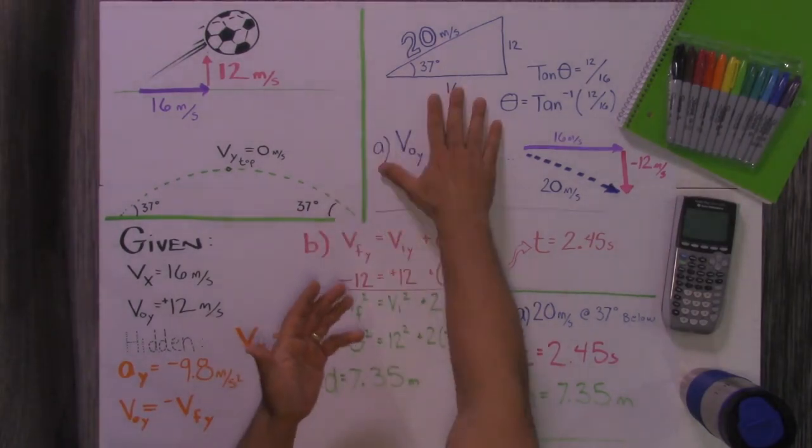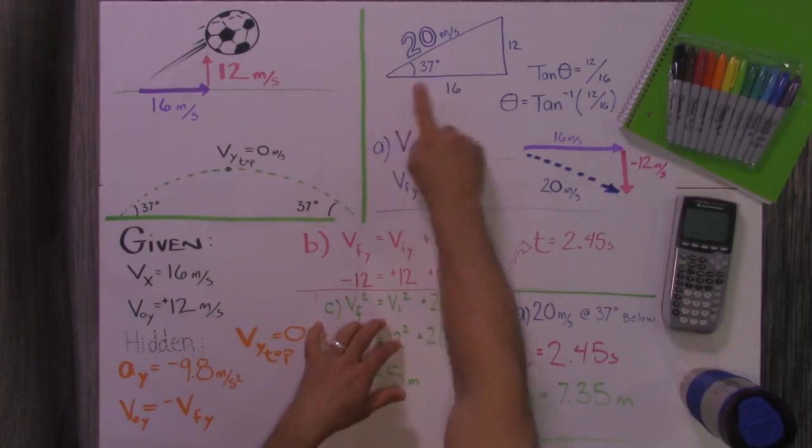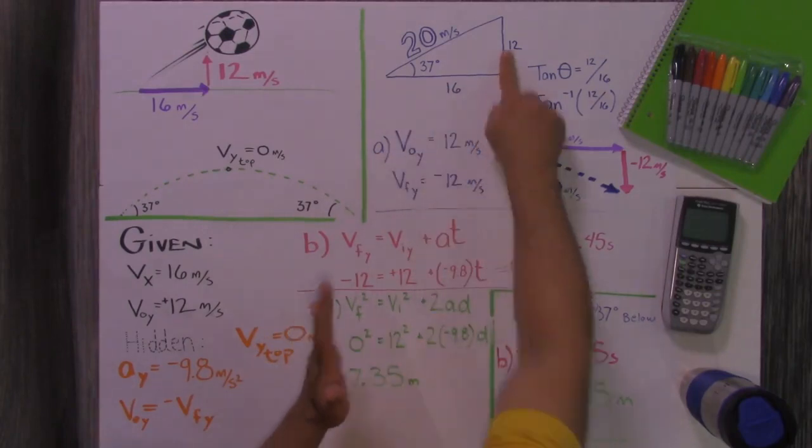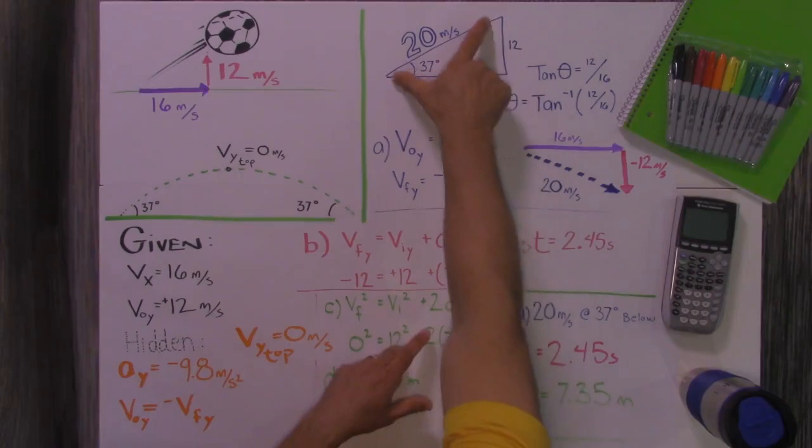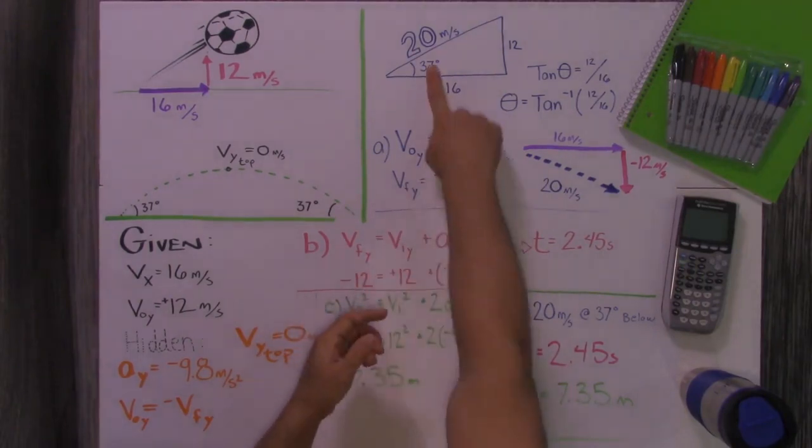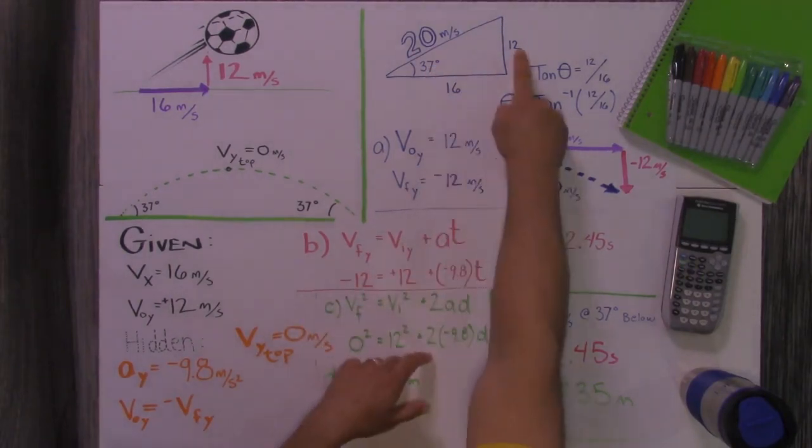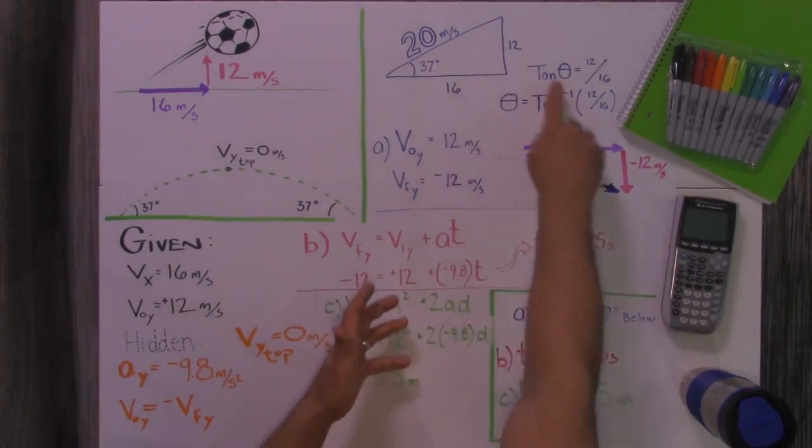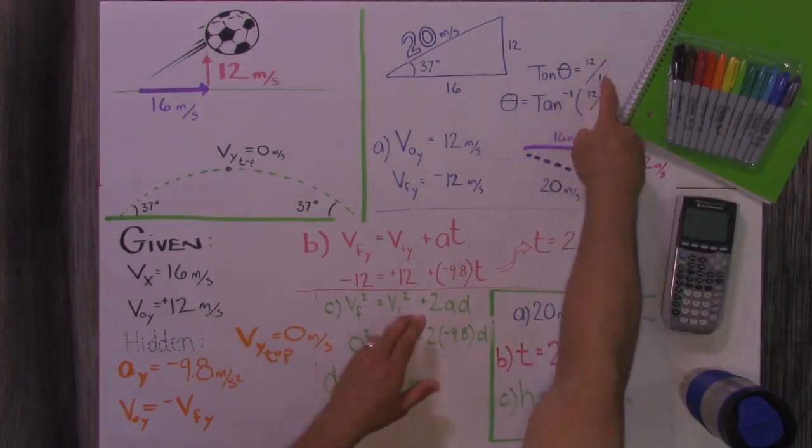The first thing I did, I drew a little triangle. I drew a right triangle, and I labeled the horizontal velocity 16 and the vertical velocity 12. I used Pythagorean theorem to find the hypotenuse. I got a velocity of 20 meters per second. Then I had to use SOHCAHTOA to find this angle. So since I knew the opposite and the adjacent, I used tangent. I said tangent theta is equal to the opposite over adjacent.